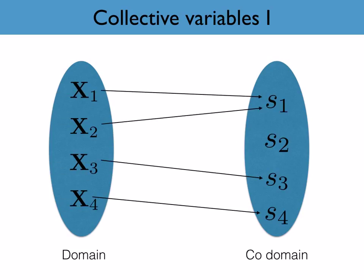The problem, as illustrated here, is that this function is many to one. As such, it may well be that two markedly different configurations of the system have the same value for the collective variable.